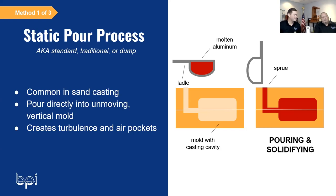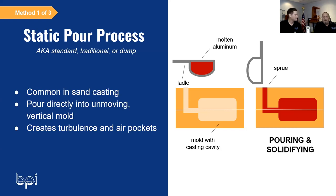Static pours are used in sand casting as well as permanent mold. For instance, a permanent mold can be a wheel mold where it is stationary except for six slides. Sand molds are stationary, using a top sprue to pour into it, filling through gating or risering. In permanent mold, you're dumping into a riser that feeds the casting.